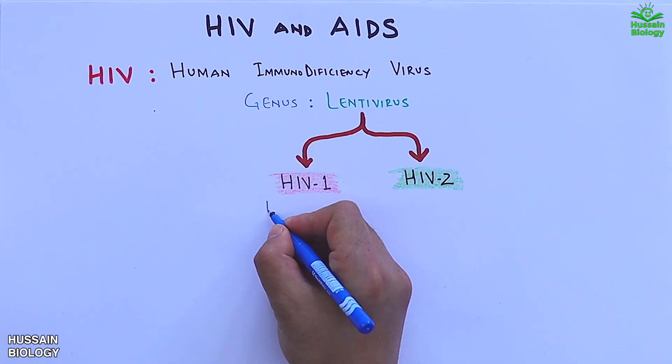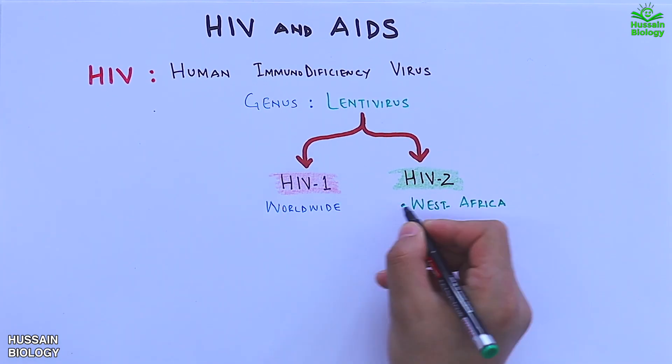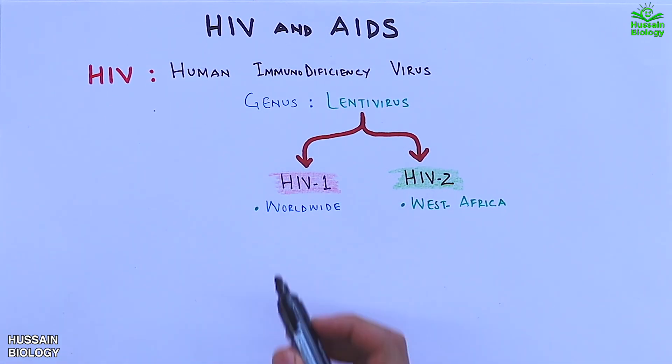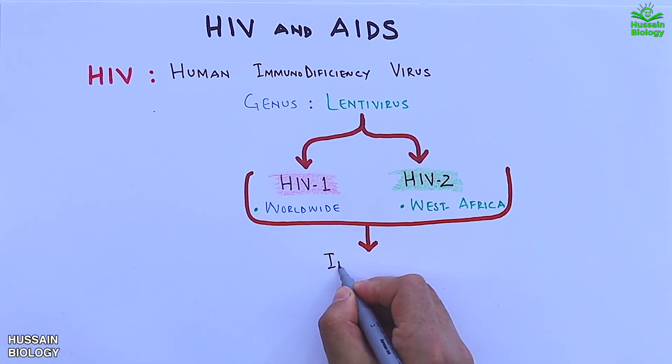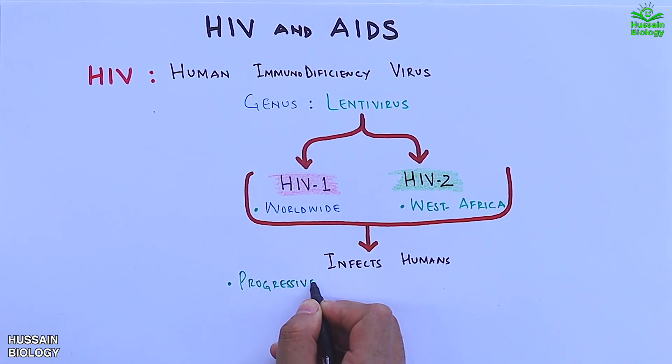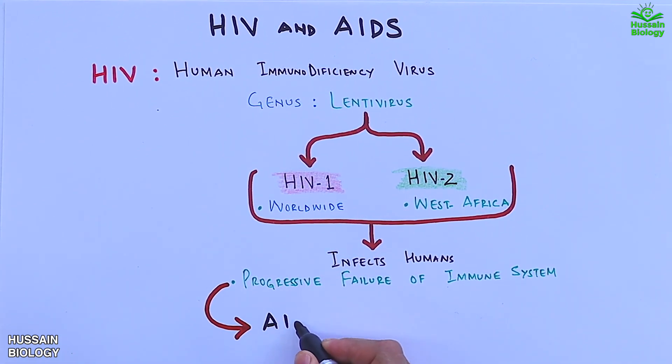HIV-1 is found worldwide, and HIV-2 is predominant in West Africa. It must be noted that HIV-1 is more pathogenic than HIV-2. HIV impacts humans through progressive failure of the immune system that ultimately leads to AIDS.